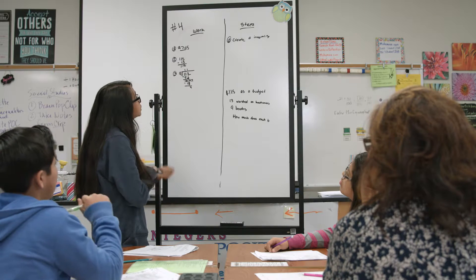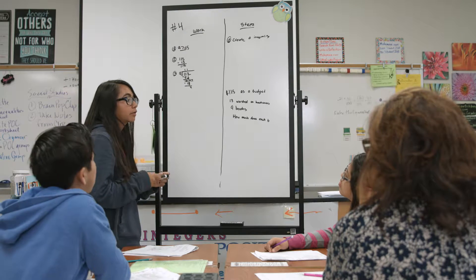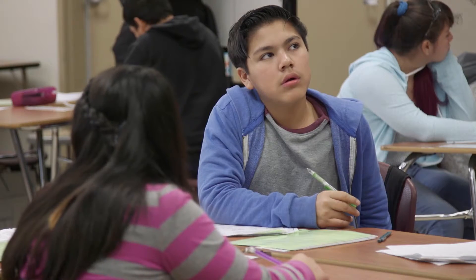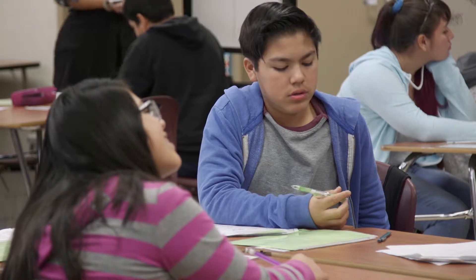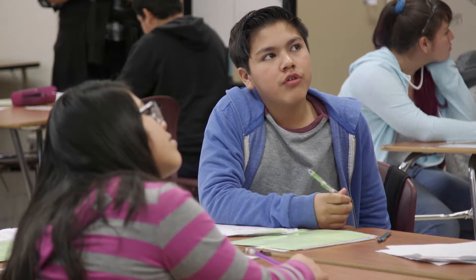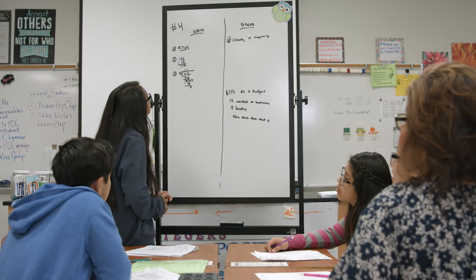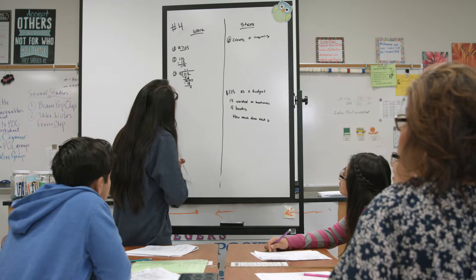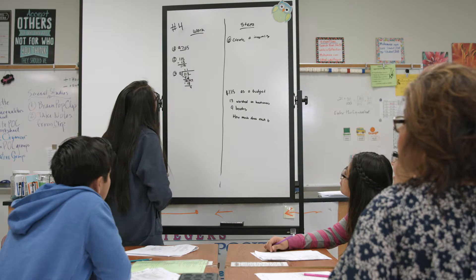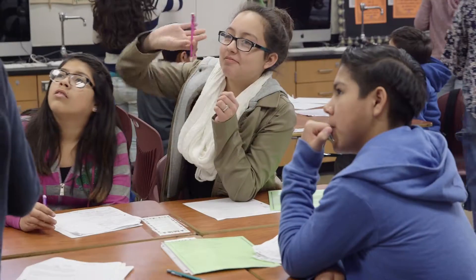A student responds: 'The 13 is the number we already used on the book covers, so we had to subtract that from the budget.' The facilitator can also give a guided question — like 'Are you sure you subtracted correctly?' — and students understand that if a facilitator asks that, most likely something is incorrect and they should go back and fix it.